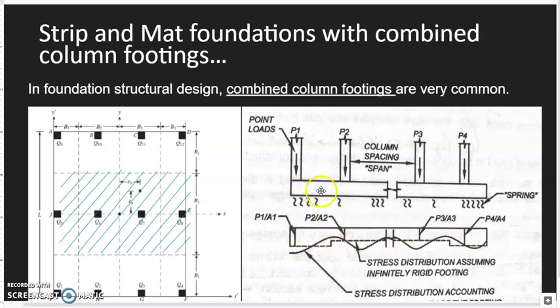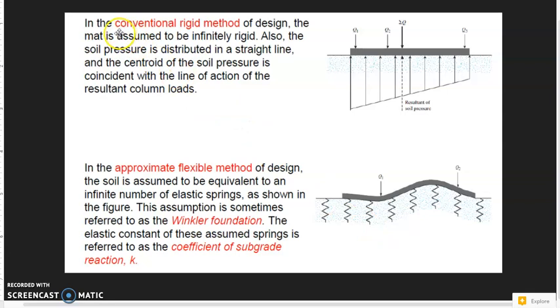If the foundation rigidity is very weak or soft, then its soil stress will be in a curve. So in the conventional rigid method, the concept of the mat foundation is very rigid. The soil is distributed in a uniform way or a linear way. The centroid of the soil stress is aligned with the centroid of column loads.